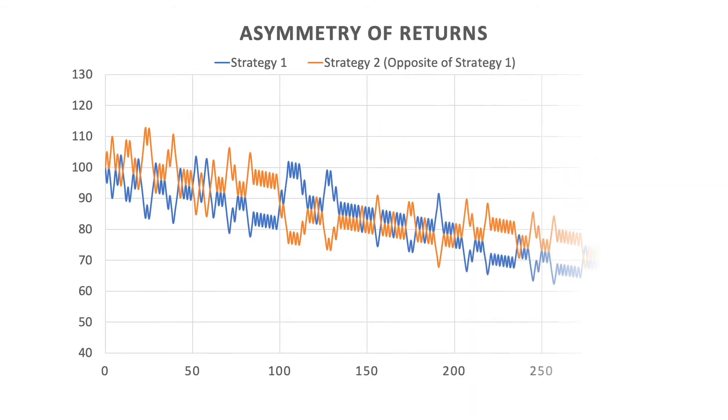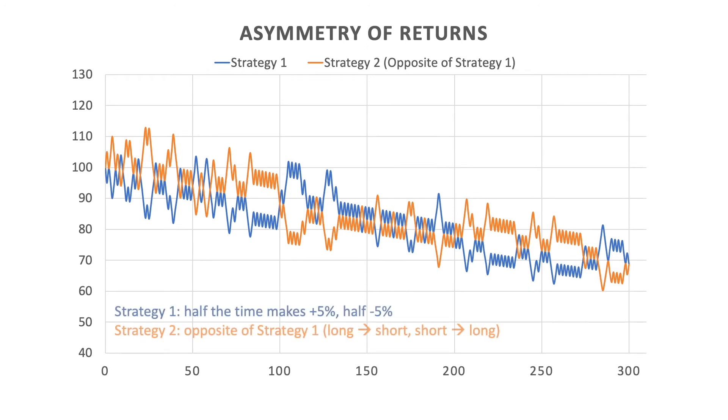To take a further look, let's create a strategy that makes 5% half the time, and the other half loses 5%. You can see even though all the percentage returns cancel out to zero, you are actually losing money consistently.